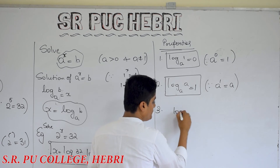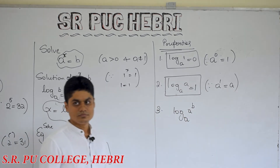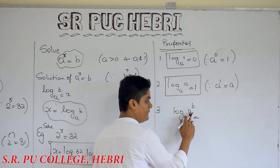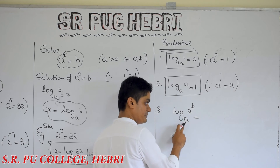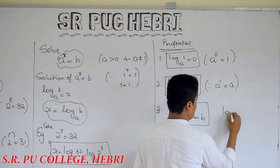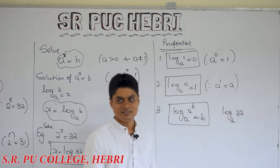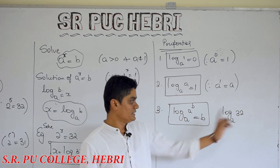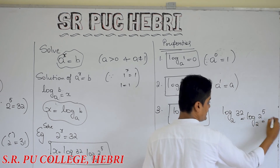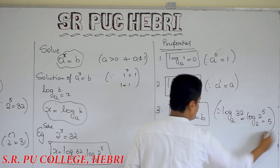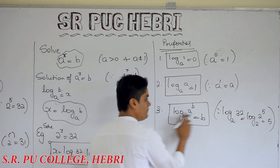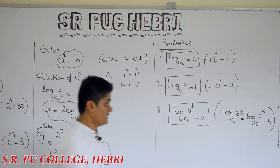Next: log of a to the power b to the base a. The property says that when the base of the exponential and the logarithm is the same, the answer is b. For example, log of 32 to the base 2 — I can write 32 as 2 power 5, then these two get cancelled and the answer is 5. So log of a to the power b to the base a is equal to b. Using this property this problem can be solved very easily.